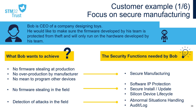In our first example, we're going to focus on secure manufacturing. Bob is CEO of a company designing toys. He'd like to make sure the firmware developed by his team is protected from theft and will only run on the hardware developed by his team. To achieve this, Bob needs to secure the manufacturing of his toys by securing the first installation of his firmware in an untrusted environment.